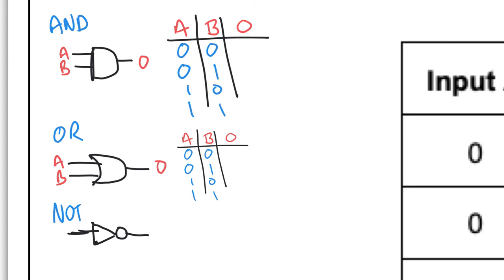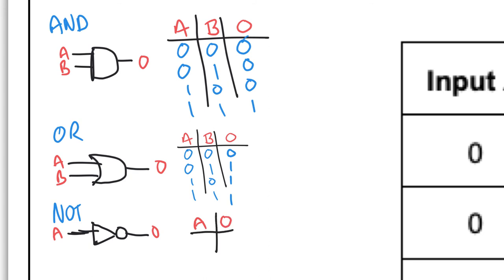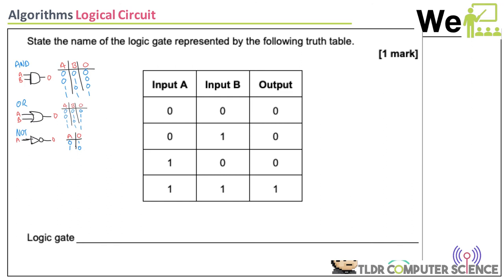For a NOT gate, there are only two combinations: if input is 0 the output becomes 1, and if input is 1 the output becomes 0 — it just flips the value.